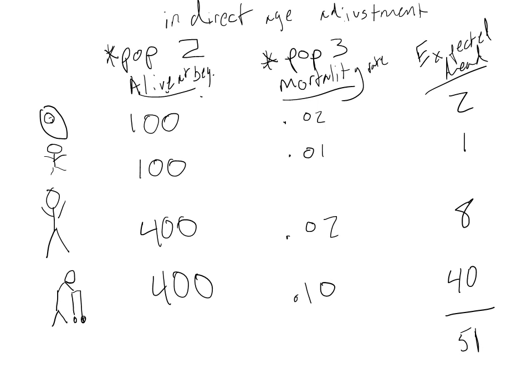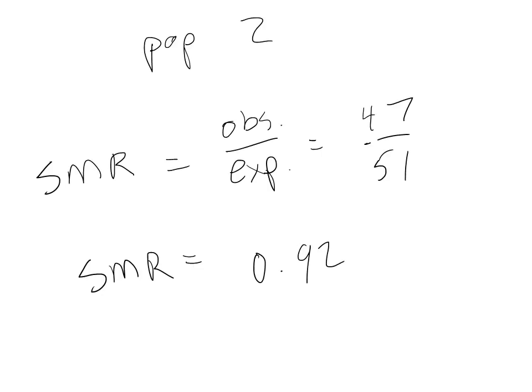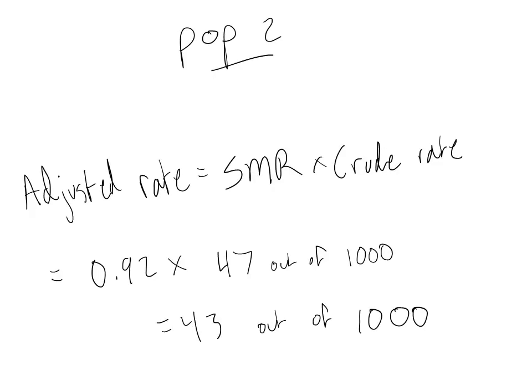Then we follow the same procedure for population 2. We apply the standard population's mortality rates to population 2's age distribution to calculate expected deaths. We then calculate the SMR by dividing the observed number of deaths by the expected number of deaths. Lastly, we calculate the adjusted rate by multiplying the standardized mortality ratio by the crude rate. In this case, our adjusted mortality rate is 43 out of 1,000.